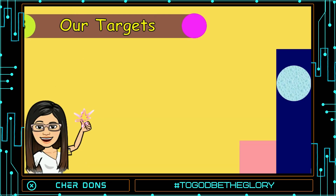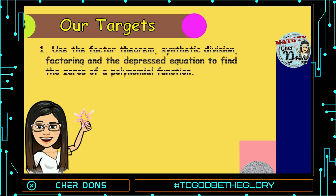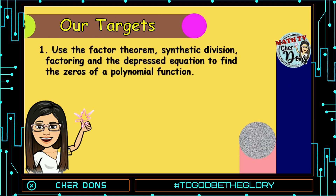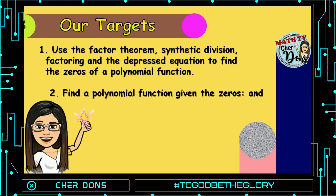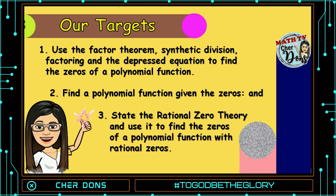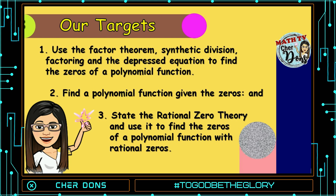Our targets for today: number 1, use the factor theorem, synthetic division, factoring, and the depressed equation to find the zeros of a polynomial function. Number 2, find a polynomial function given the zeros. And number 3, state the rational zero theorem and use it to find the zeros of a polynomial function with rational zeros.